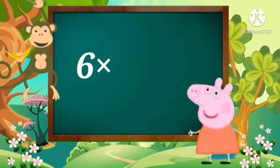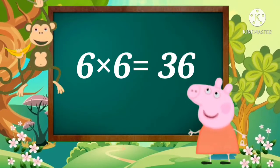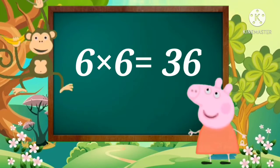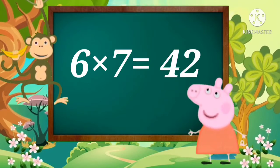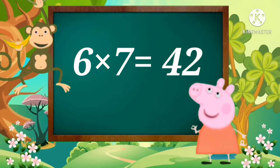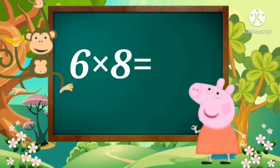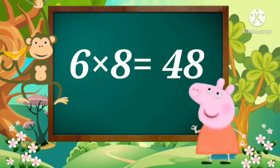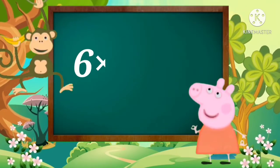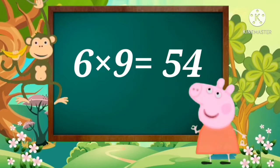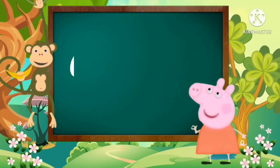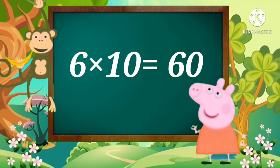Six sixes are thirty-six. Six sevens are forty-two. Six eights are forty-eight. Six nines are fifty-four. Six tens are sixty.